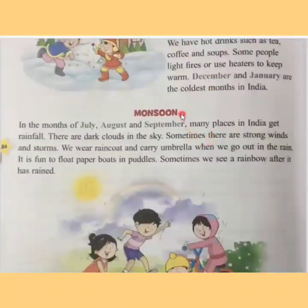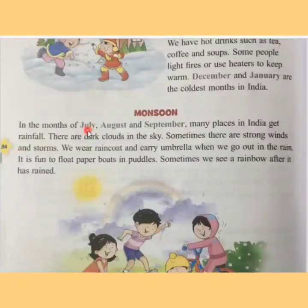Next is monsoon, children. In the months of July, August, and September, many places in India get rainfall. There are dark clouds in the sky, sometimes strong winds and storms, thunderstorms, or lightning in the sky. We wear raincoats and carry umbrellas whenever we go out in the rain.